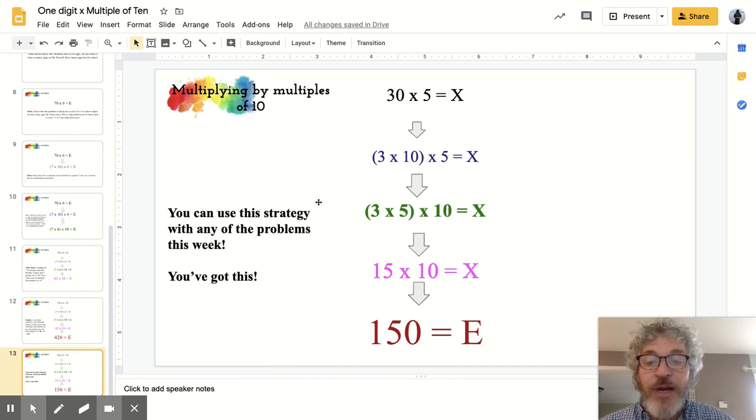We're going to use this same strategy to solve problems this week. So here's another example. 30 times 5 equals some product. That's what the X represents. I know that 30 is 3 groups of 10. So in order to solve this and make it math-friendlier, I just used the associative property again, and I changed the order so that instead now I have 3 times 5 times 10.